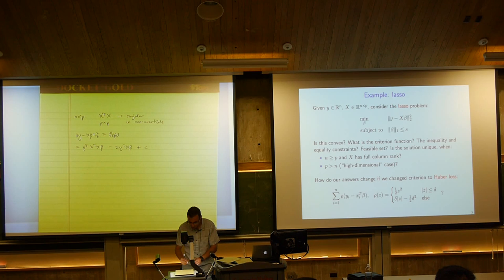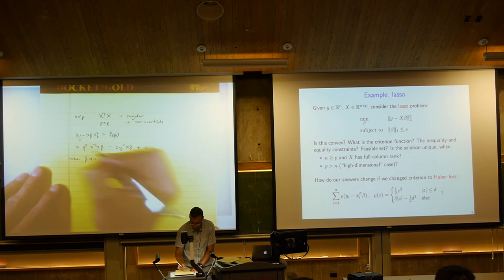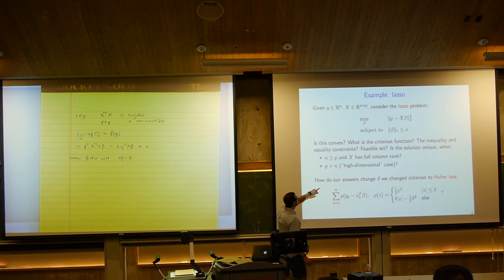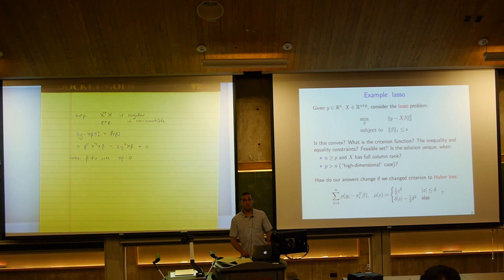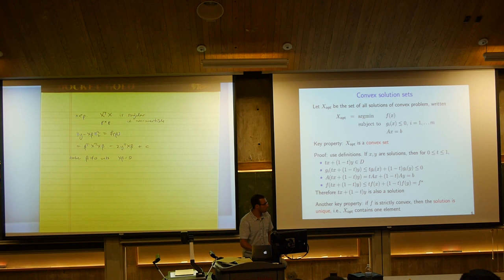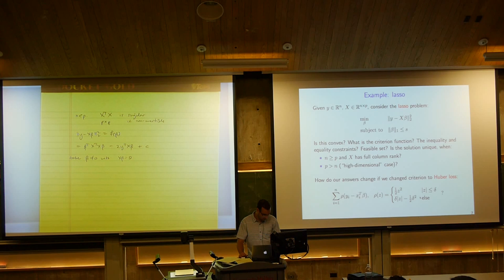In general, if P > N, we can't establish strict convexity, so we cannot claim a unique solution. Interestingly, we'll see later that in many high-dimensional data cases, the lasso actually still gives a unique solution — something we can verify from the KKT conditions. For now: we can't say it's unique; we just don't know.